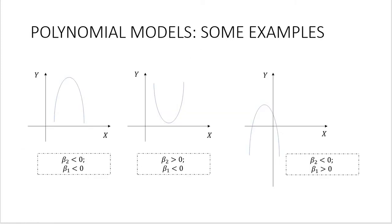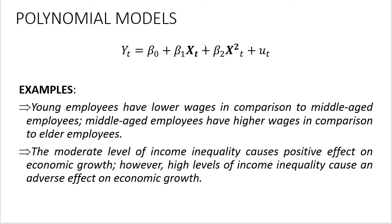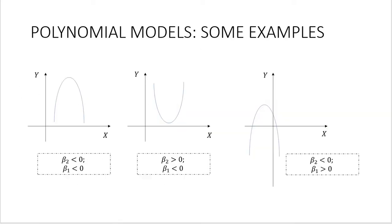Okay, so here you can find some examples. Again, this is the general form of this model, where β1 stands for the coefficient of linear term of x and β2 stands for the coefficient of quadratic term of x. So when both β1 and β2 are negative, then the function takes this shape. If β2 is positive and β1 is negative, then it takes this shape. And if both variables are negative, then it looks like this.